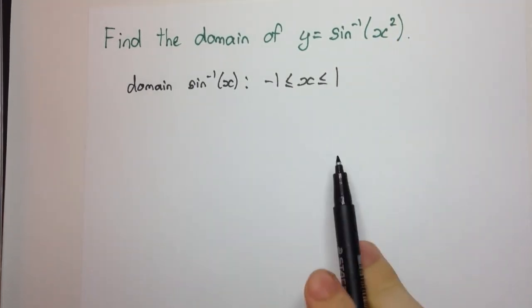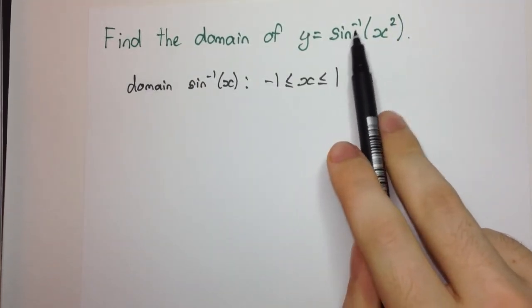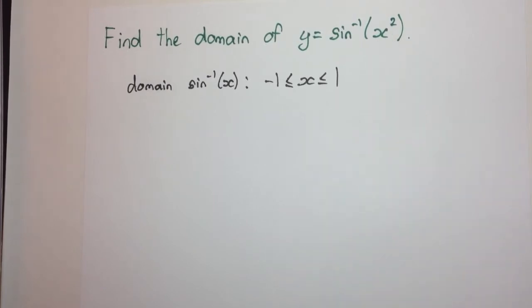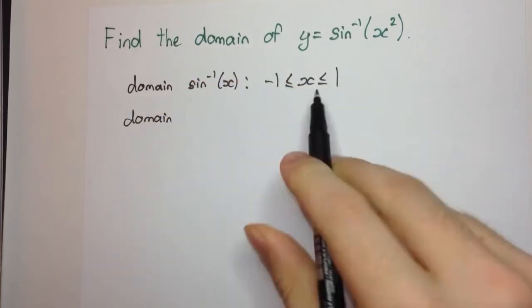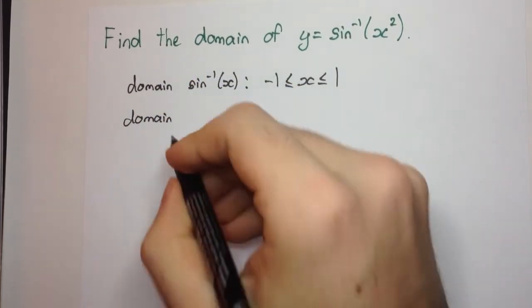So if we're trying to work out sin inverse of x squared, the way we do that is by substituting this x for x squared.